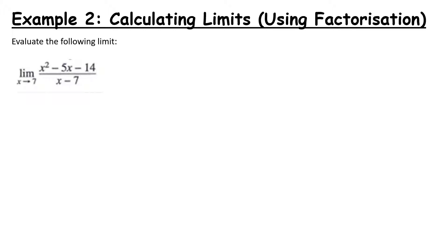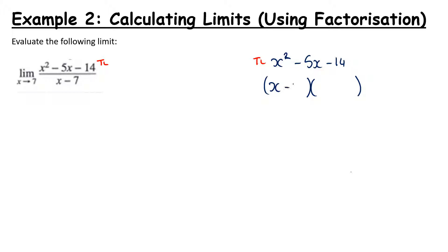So we cannot just do simple substitution. We must instead try to factorize what we have, simplify it, and then hopefully we'll be able to do substitution. Taking the top line, x squared minus 5x minus 14, I can factorise that using the guide number method and I get x minus 7 times x plus 2.